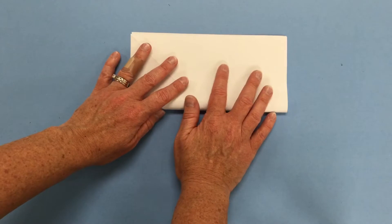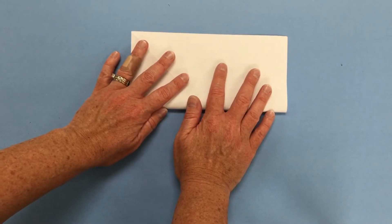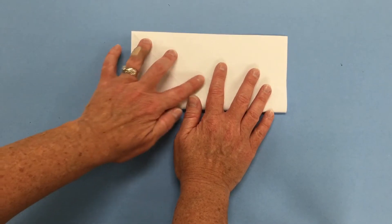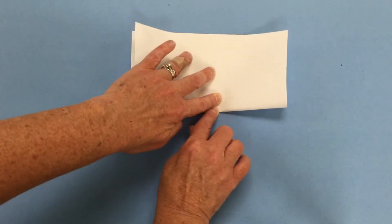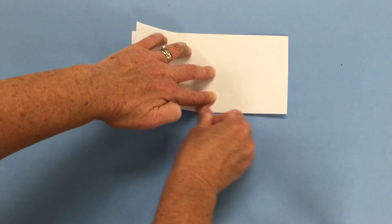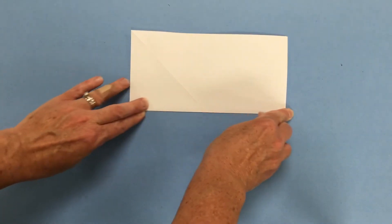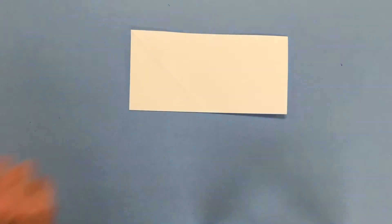We're just going to fold that neatly. Now I want you to be kind of picky about how you line your paper up each time we fold and really get nice strong creases in your paper as well.